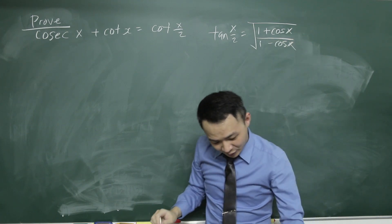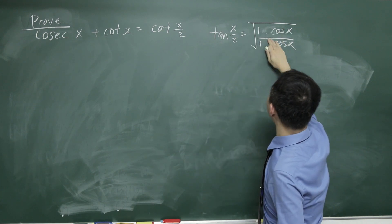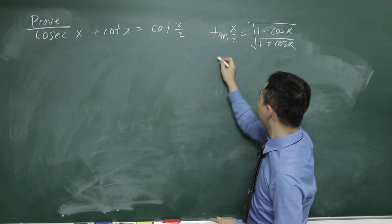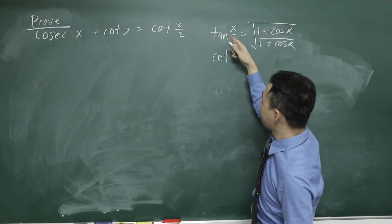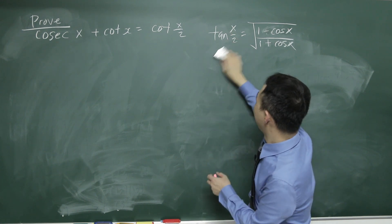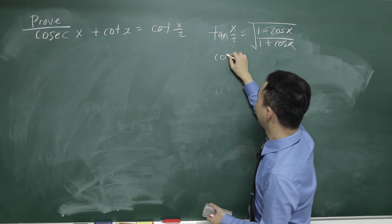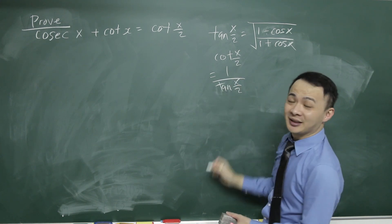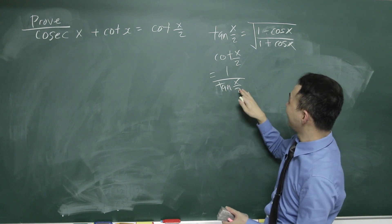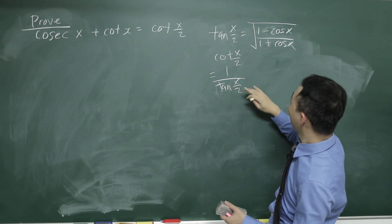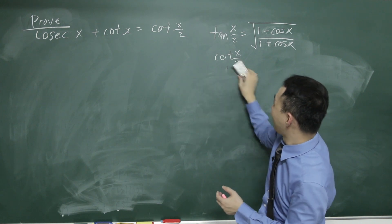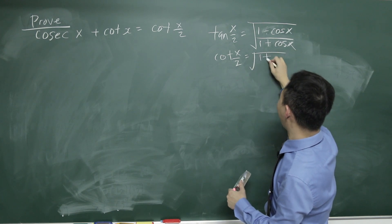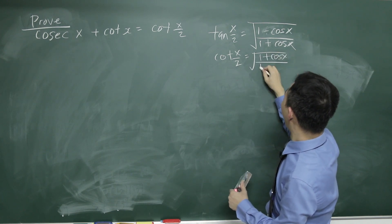Actually, the plus and minus is opposite — it's 1 minus cos x over 1 plus cos x for tangent x over 2. So for cotangent x over 2, it is the reciprocal of tangent x over 2. Because cotangent x over 2 equals 1 over tangent x over 2, I just flip the fraction, giving 1 plus cos x over 1 minus cos x.